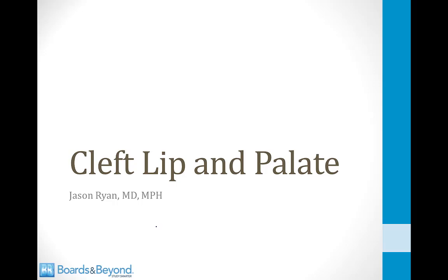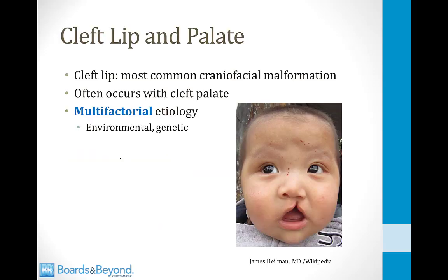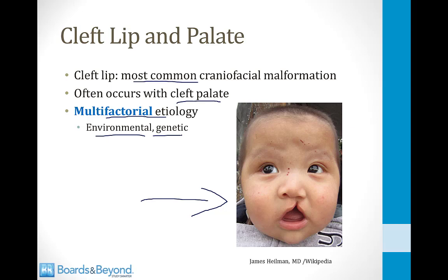Hello everyone and welcome to our module on cleft lip and palate. Cleft lip and palate are congenital malformations of the face and the roof of the mouth. Cleft lip is the most common cranial facial malformation, and it often occurs together with a cleft palate, which is a gap in the roof of the mouth. The exact cause of these disorders is not known, but it is believed that they have a multifactorial etiology that depends on environmental and genetic factors.